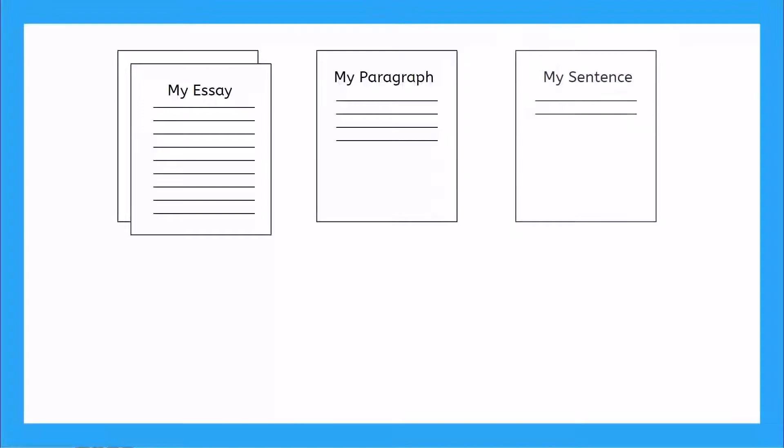Have you ever written an essay or a book report? You might not remember it, but at some point you had to learn how to write a paragraph, and before that you had to learn how to write a sentence. You learned that saying 'the dog' is not a complete sentence because a complete sentence needs a subject and a verb. The dog is just a subject. We need a verb too, like 'barked' or 'ran'. The dog barked and the dog ran are both complete sentences.